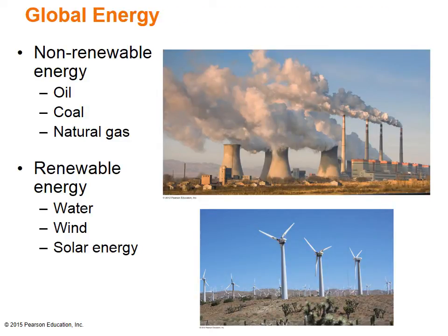Global energy is another area studied under physical geography and environment. The world runs on energy, which is the capacity to do work. Energy resources are categorized as either non-renewable or renewable. Non-renewable resources are natural resources considered finite because they are not self-replenishing or they take a very long time to do so, like fossil fuels and uranium. Fossil fuels are coal, oil, and natural gas that come from the remains of plants and animals that lived millions of years ago. Over time, sand and other sediments covered these deposits while heat and pressure gradually transformed them. Renewable resources, however, are resources replenished naturally or through human intervention, like planting a tree, and include water, wind, and the sun.